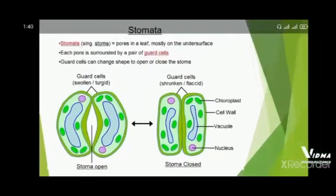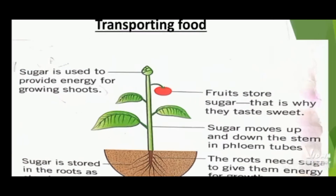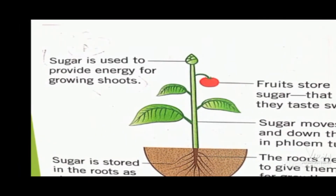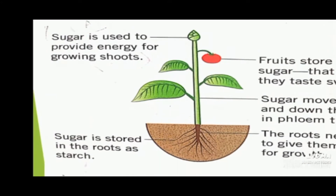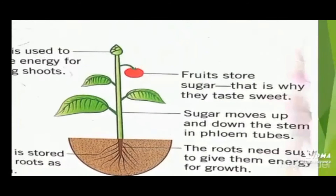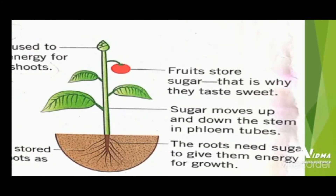Now we will talk about transporting food — how the food will be transported. Sugar is used to provide energy for growing. Sugar is stored in the root as starch. Fruit stores sugar, which is why they taste sweet. Sugar moves up and down the stem in a phloem tube. The roots need sugar to give them energy and to grow.